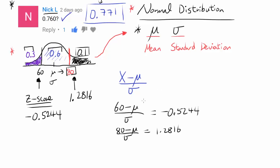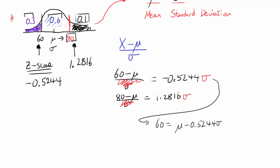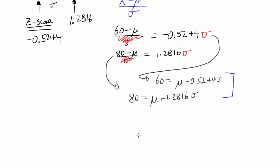Now this is just a system of equations for which we can find μ and σ. Solving the system of equations, you should get a mean of approximately 65.807 and a standard deviation of approximately 11.074.